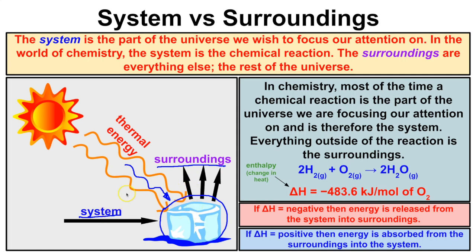In chemistry, most of the time a chemical reaction is the part of the universe we are focusing our attention on and is therefore the system, and everything outside of the reaction is the surroundings. For example, we have two moles of hydrogen gas reacting with one mole of oxygen gas to produce two moles of water molecules, and this chemical reaction would be the system.